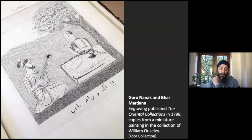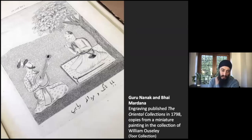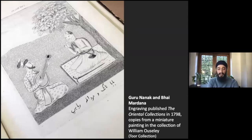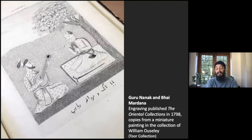We saw the first work commissioned by a European, but this is likely the first time Europeans saw an image of Guru Nanak published in the West. It dates to the later part of the 18th century and is an etching, suggesting it was made from an existing painting — a painting that was once in the collection of Sir William Ouseley, a British orientalist. It's fun to see an image of Guru Nanak in the West in the late 1700s, when Ranjit Singh was only about 18 years old, yet the Western audience was already seeing images of Guru Nanak.